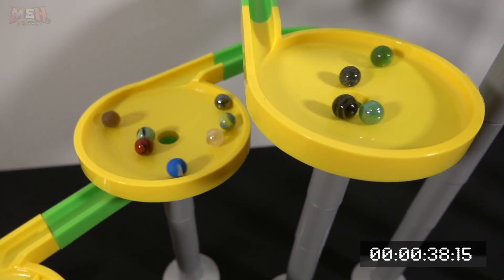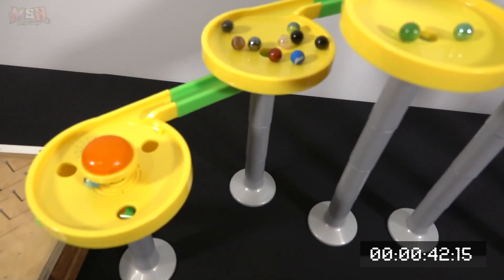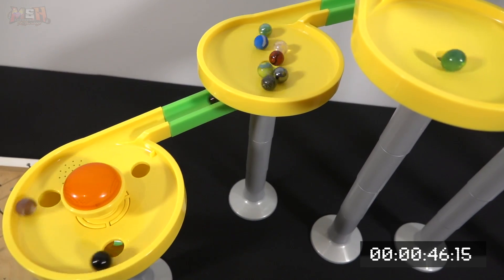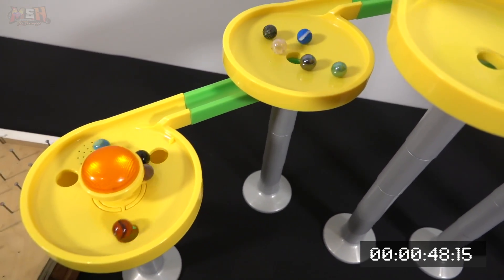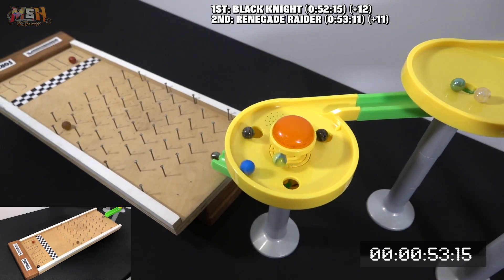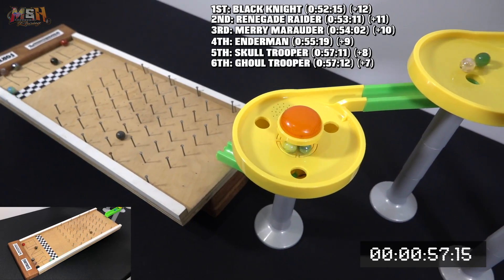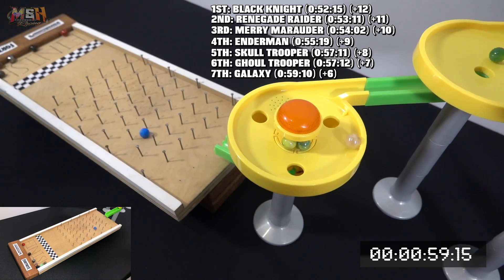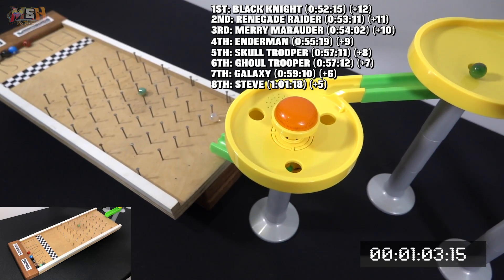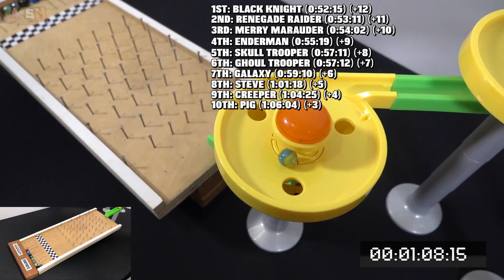Gold Trooper once again keeping his lead into the pinball dish. Unfortunately getting stuck, and this is going to be bad for him unless it's from another member of Fortnite. And there we go, looks like now Black Knight is going to be taking the lead, followed by Renegade Raider and Merry Marauder. Enderman placing fourth, Gold Trooper fifth, Galaxy seventh. Fortnite definitely has the advantage in race number one.